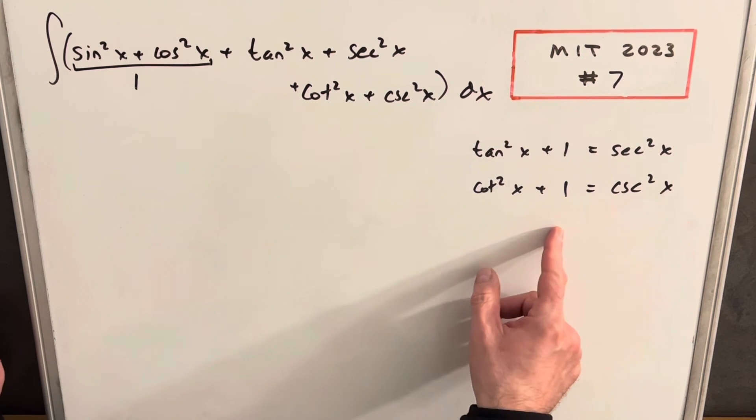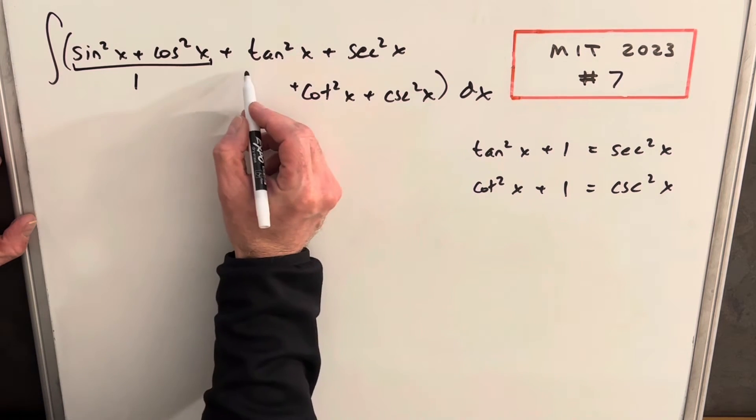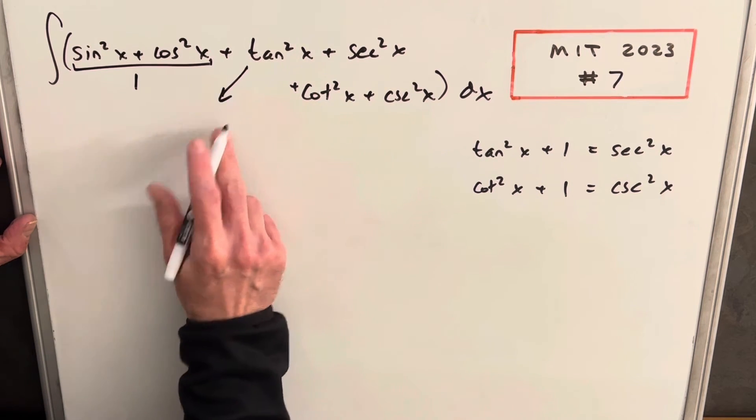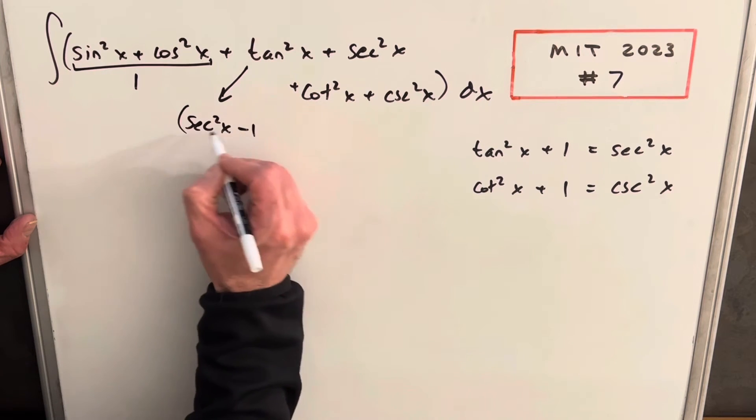Okay, I'm going to make use of these two identities over here on the right. So I'm just going to manipulate them a little bit. So what we're going to do is for tan squared, I'm going to write this as secant squared x minus 1.